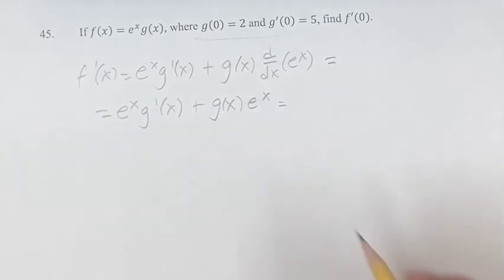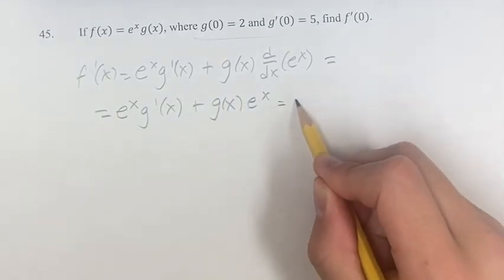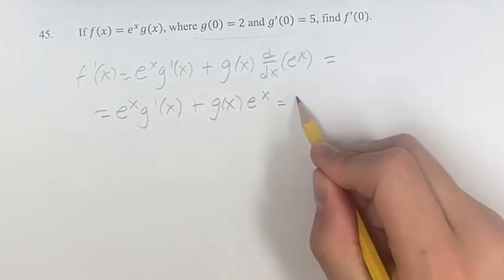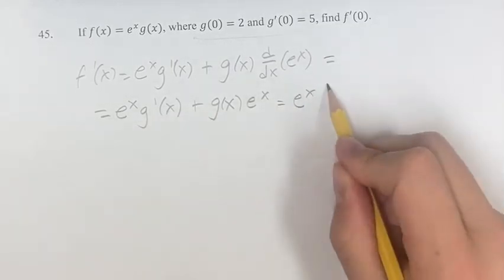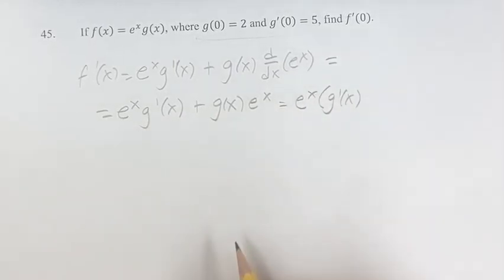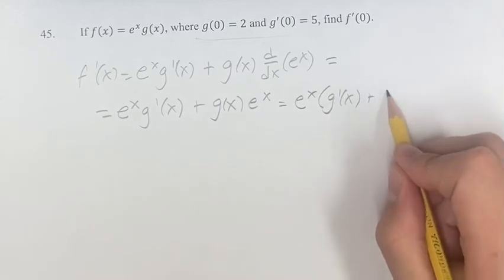One last step might make it a little bit easier. We can factor this by grouping. So we have e to the x times the derivative of g plus e to the x times g.